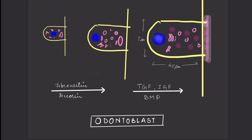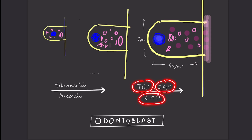The cell organelles at the base secrete the dentine matrix. A completely differentiated odontoblast is 40 micrometers in height and 7 micrometers in width, with the nucleus at the apex and organelles at the base. Growth signaling factors — TGF, insulin growth factor, and bone morphogenic protein — are secreted from the ameloblast to the odontoblast via epithelial-mesenchymal interaction, stimulating secretion of the pre-dentine layer.